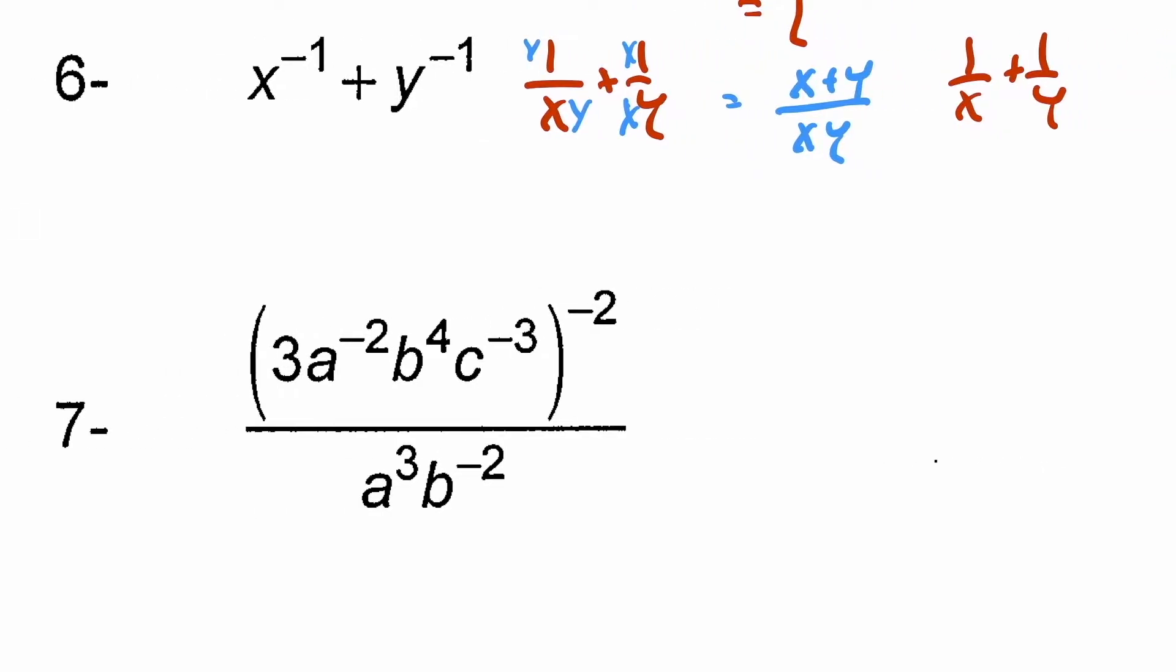All right, question number seven. The negative two exponent is going to come in and multiply all the exponents. So on the top in the bracket.